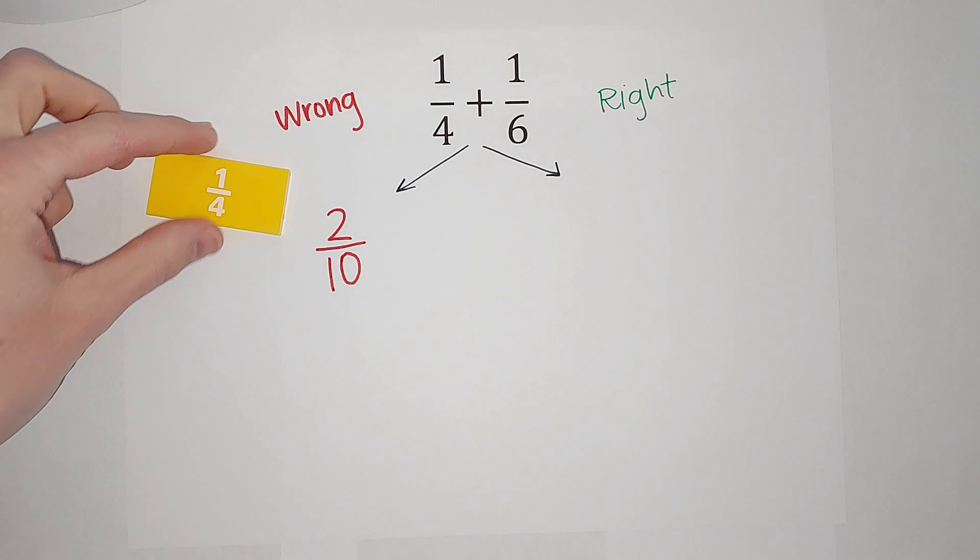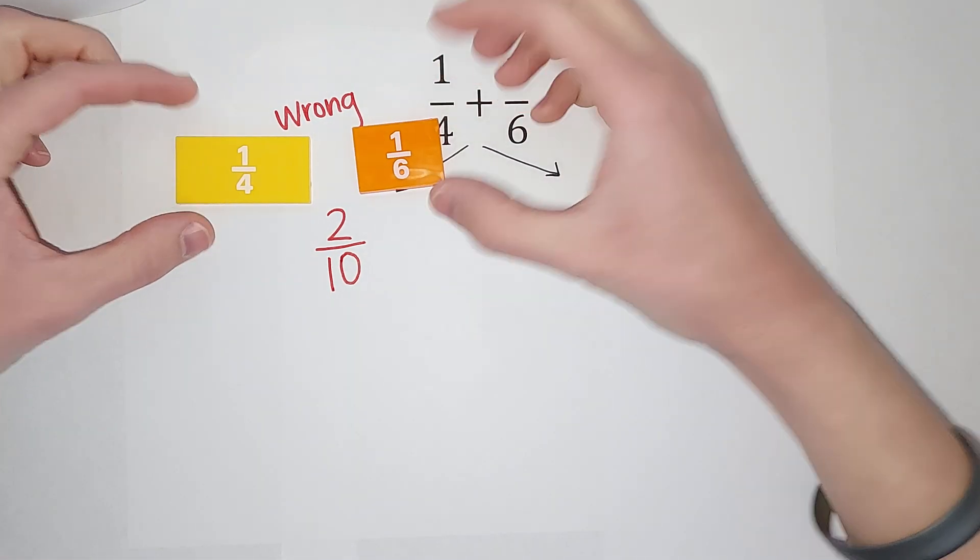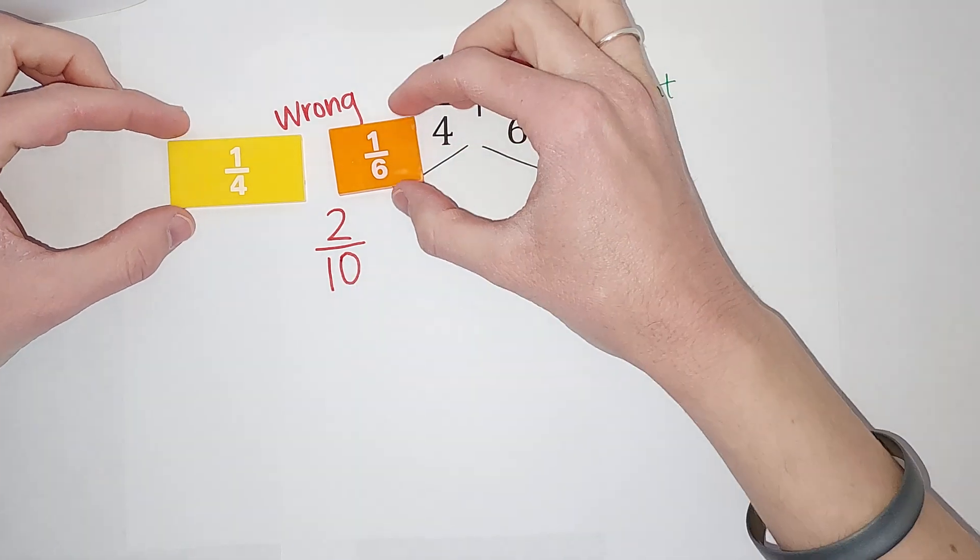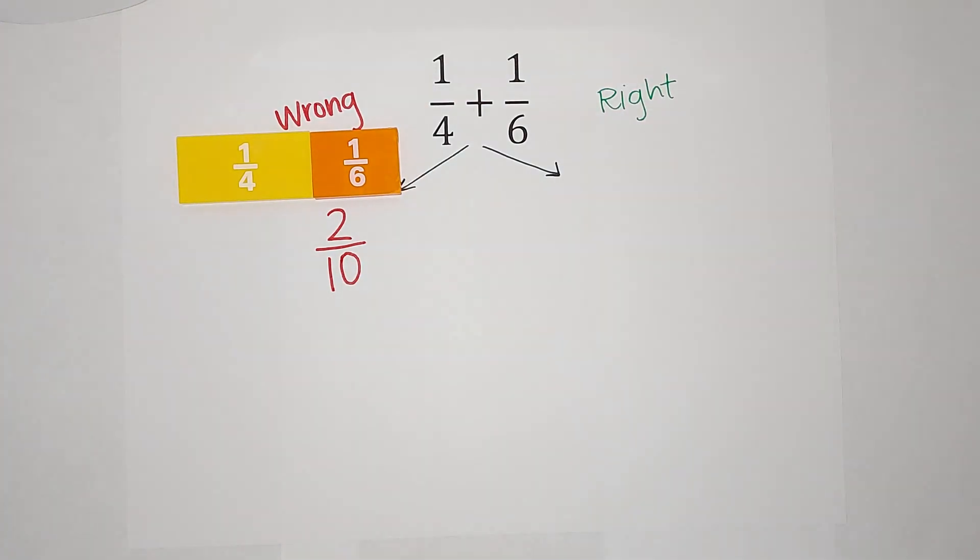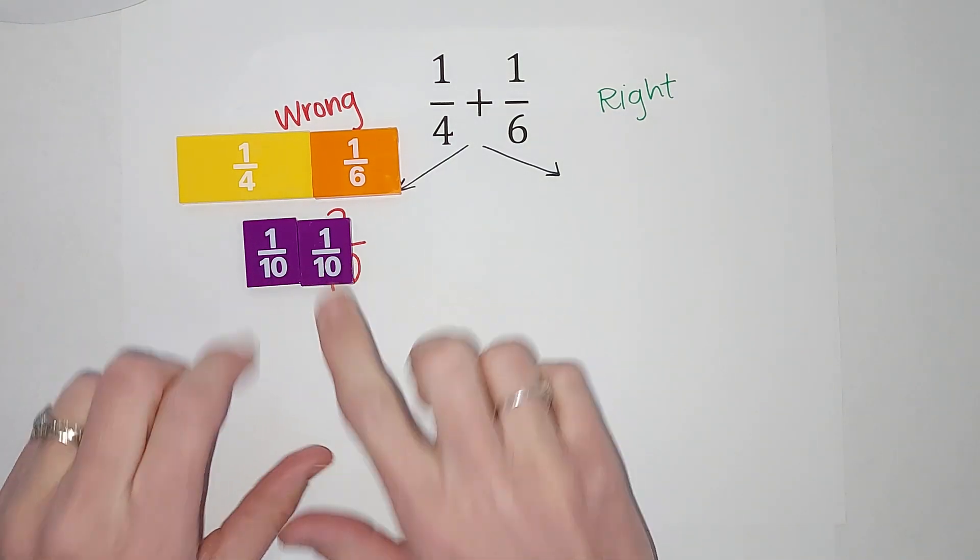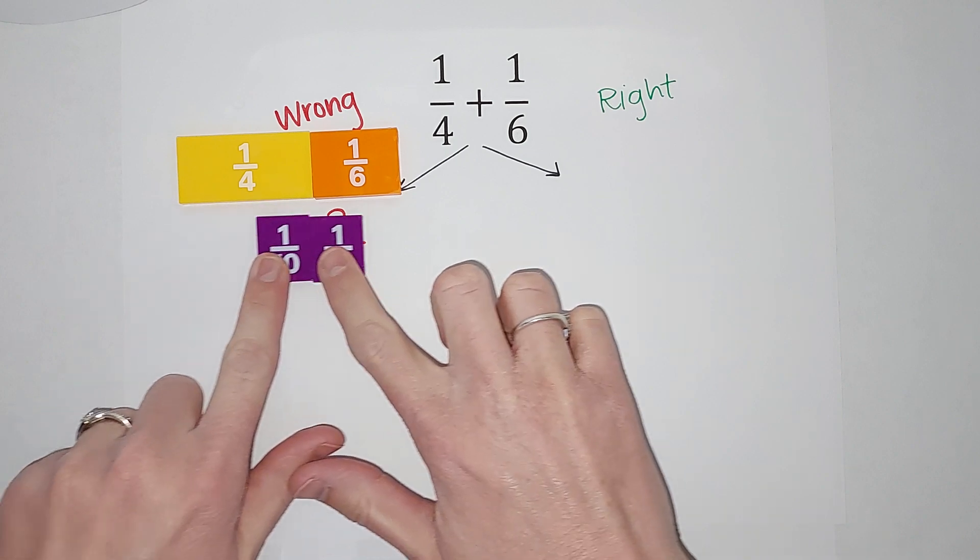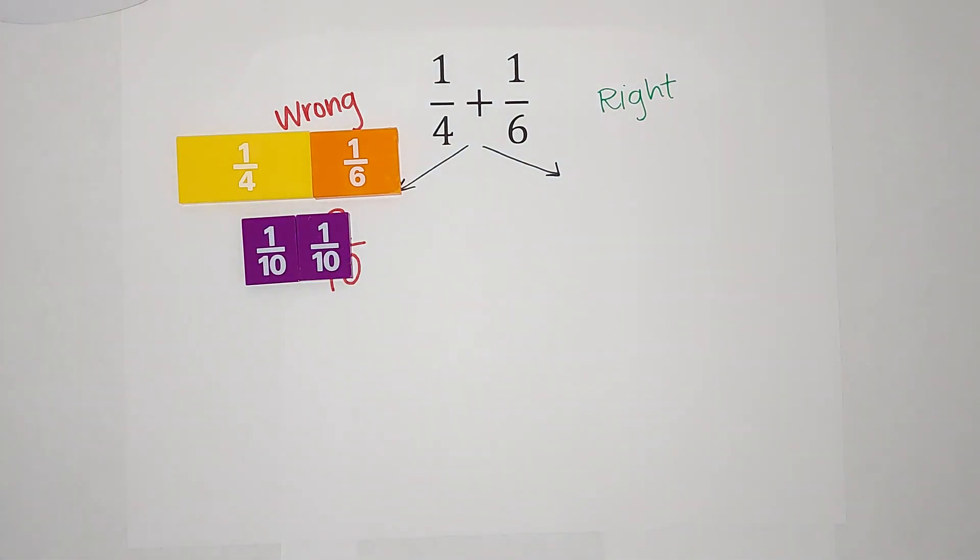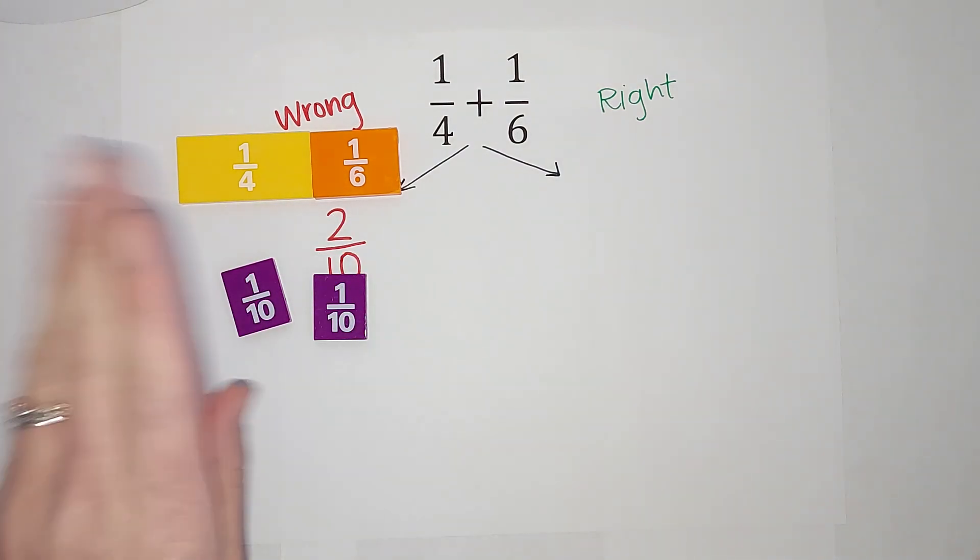Okay, so we've got 1/4 plus 1/6, right? And according to this way, when I add them, I should get 2/10. But I'm so sorry to tell you, this is what 2/10 looks like. It's not even close, right? So that way does not work.